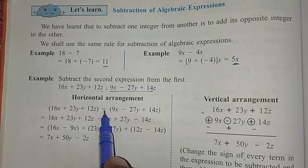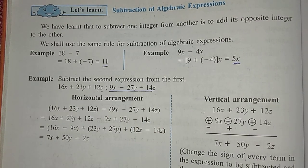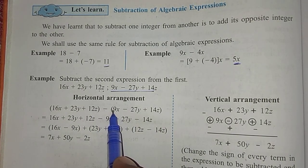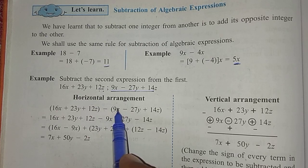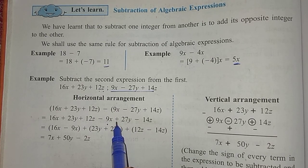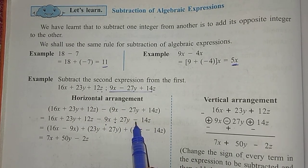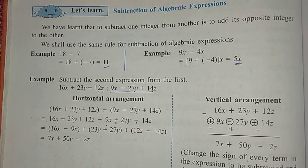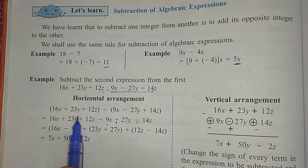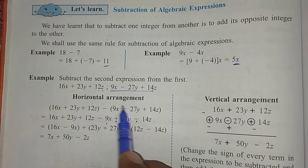Here a negative sign — a minus sign — is there outside the second bracket. Because of this minus sign, all signs of all these terms change. Minus multiplied by plus gives minus, so minus 9x here. Minus multiplied by minus gives plus, so plus 27y here. Minus multiplied by plus gives minus, so minus 14z here. When a negative sign is outside the bracket, all signs change.